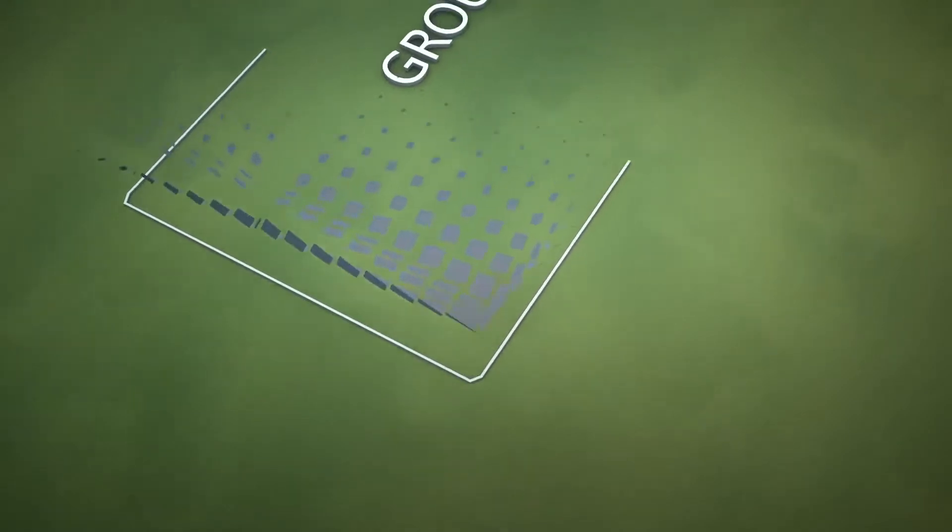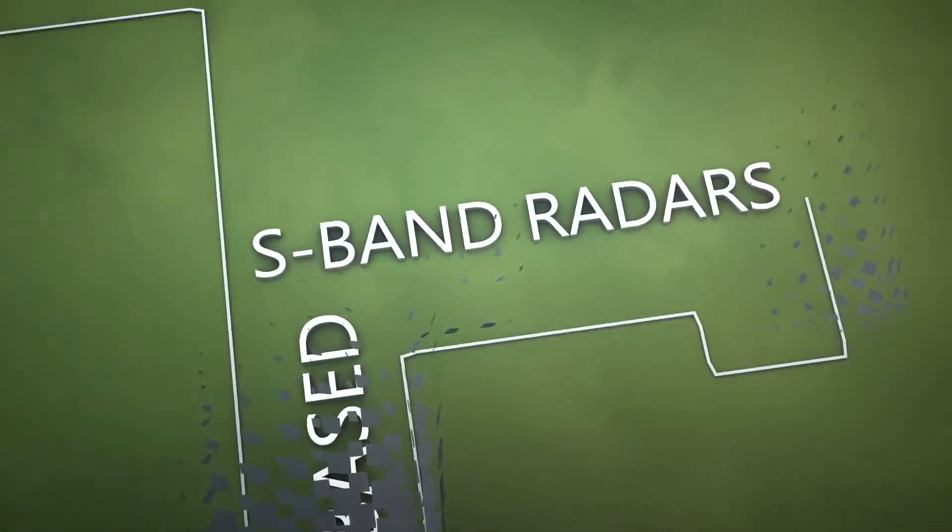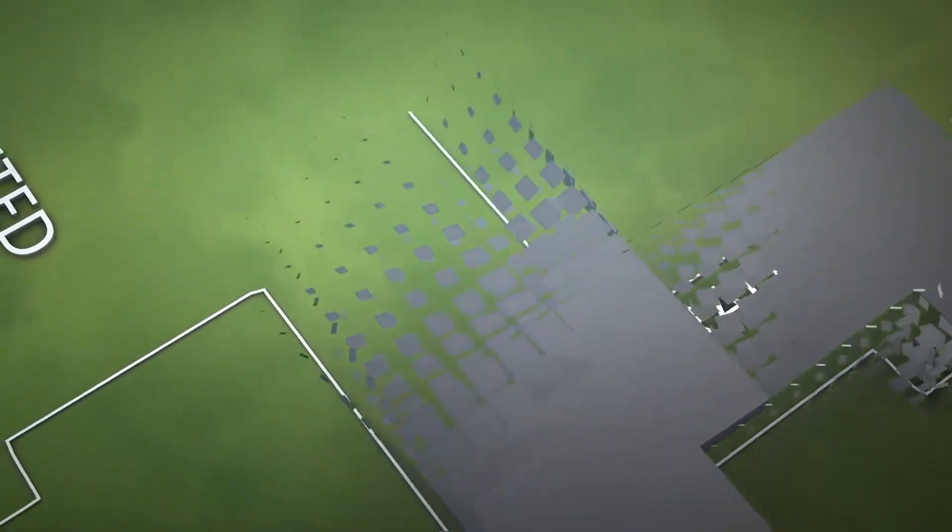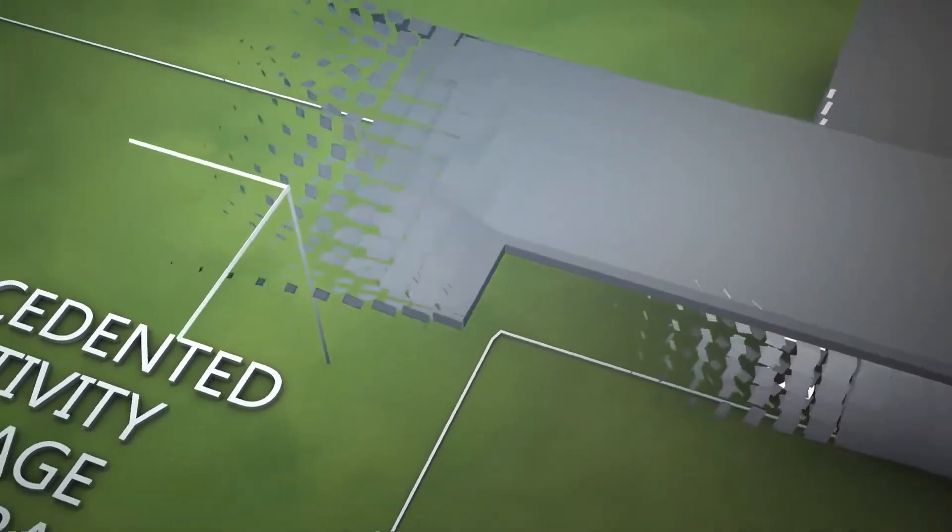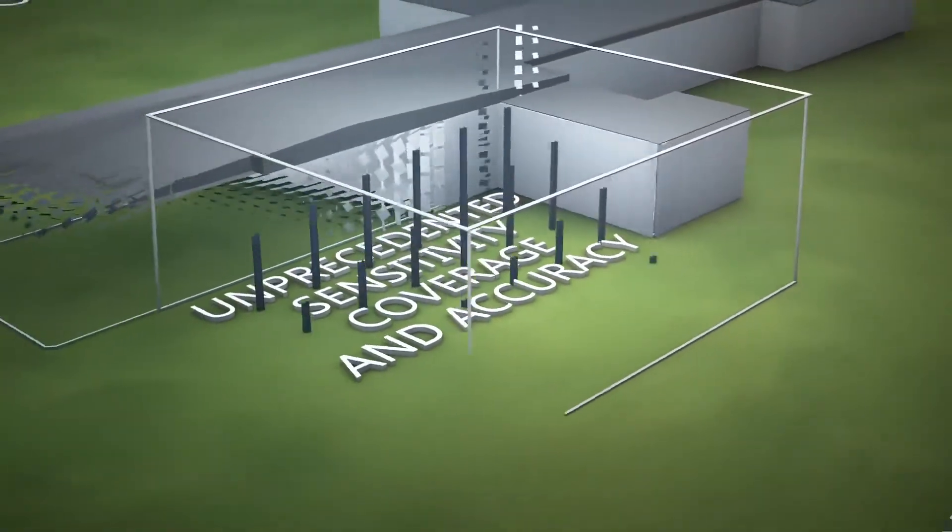Lockheed Martin Space Fence System is a ground-based system of S-band radars designed to greatly enhance the Air Force Space Surveillance Network. It provides unprecedented sensitivity, coverage, and tracking accuracy.